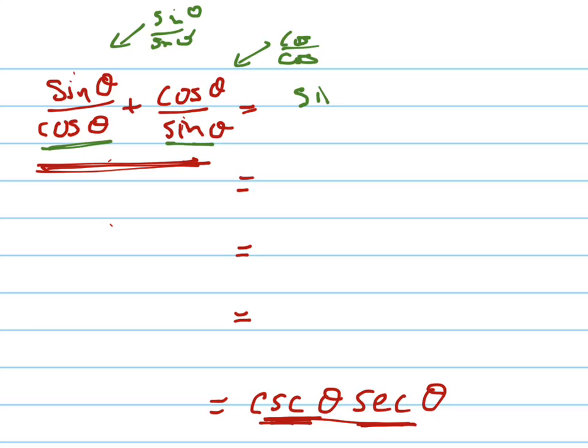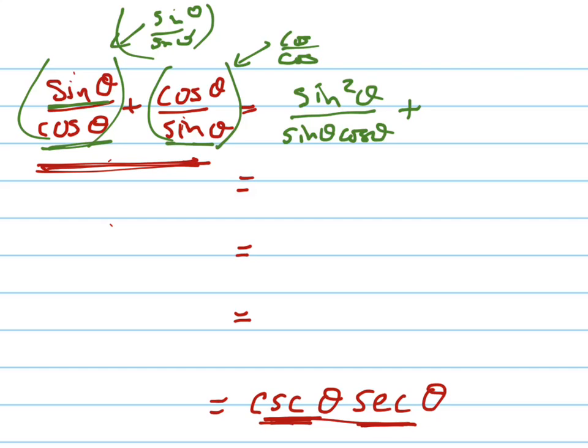I'll get sine squared theta over sine theta cosine theta, because that's what this is going to be. If I multiply this times this, that's what I'll end up with, plus I'm going to get cosine squared theta over sine theta cosine theta.